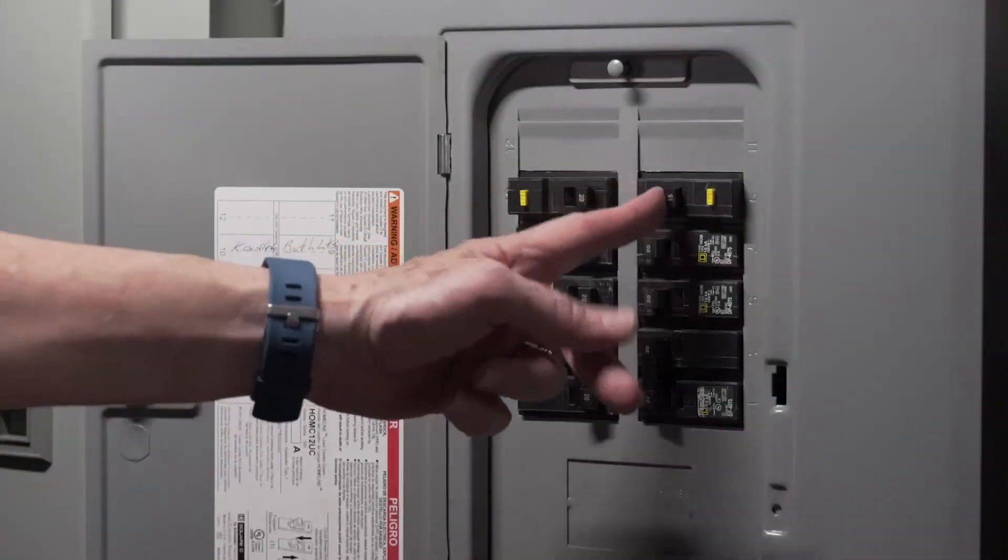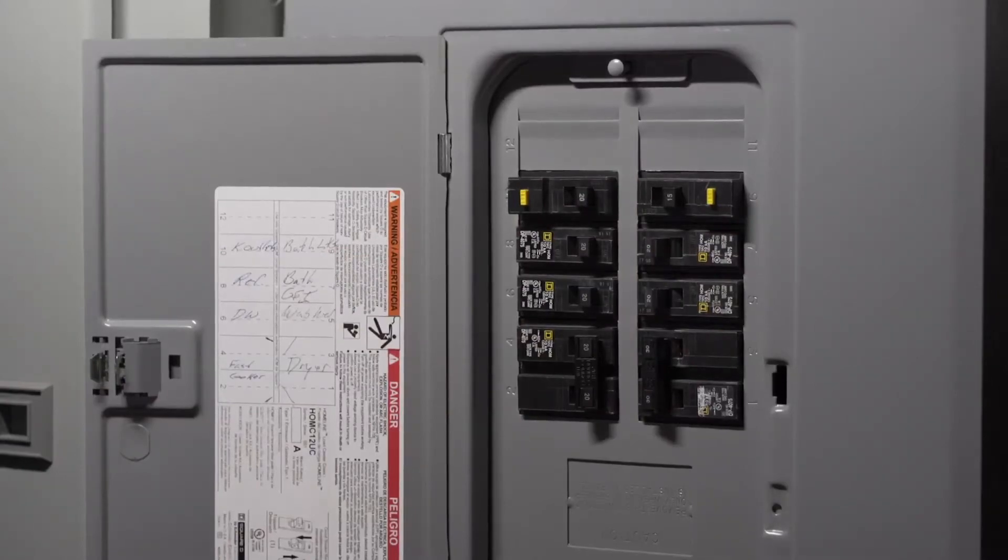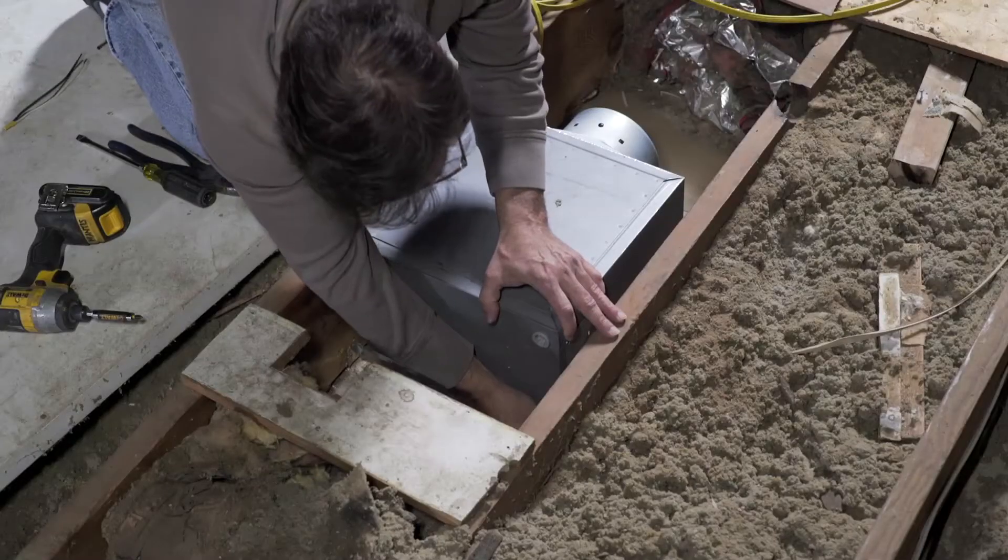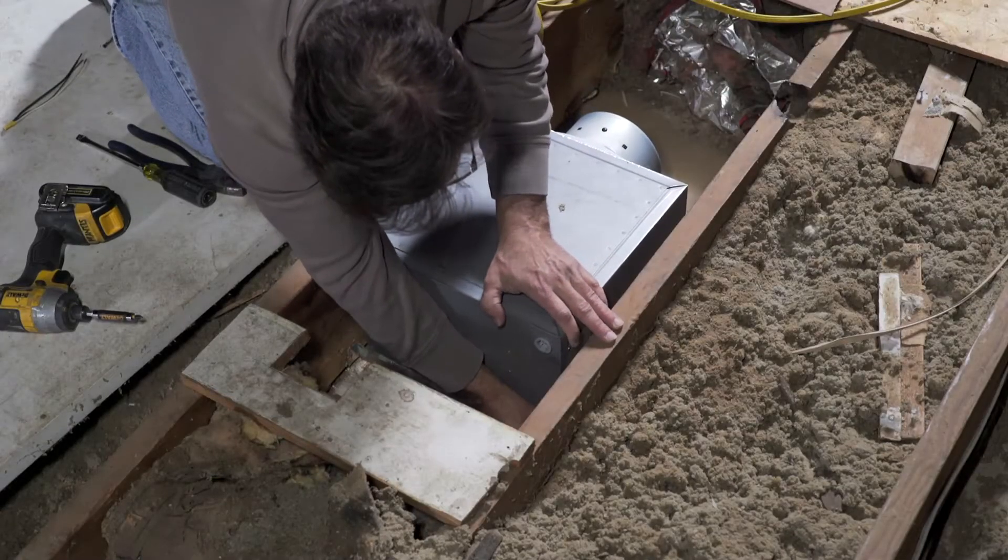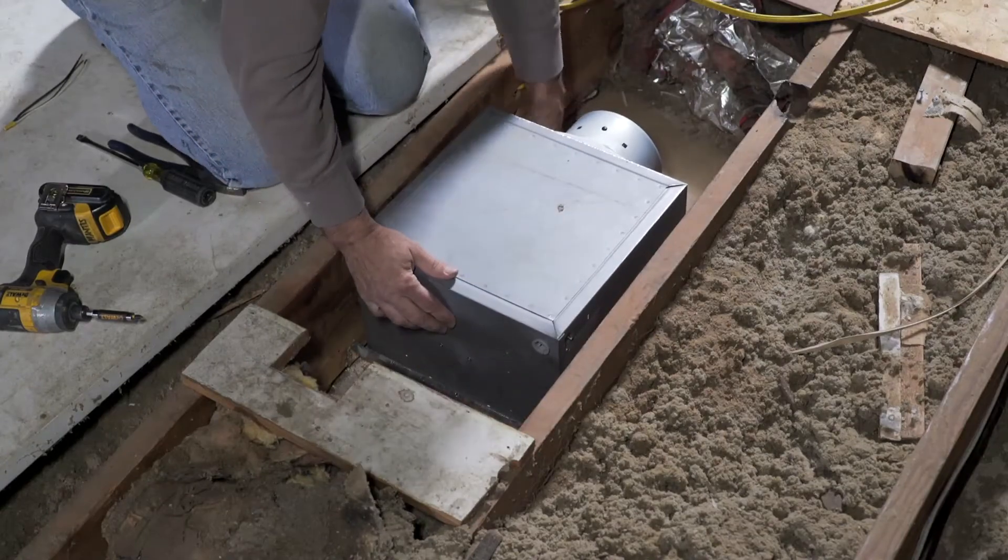Before starting any installation, make sure to disconnect the power supply at the circuit board. Choose a location where the ducting and number of elbows in the ducting will be kept to a minimum.